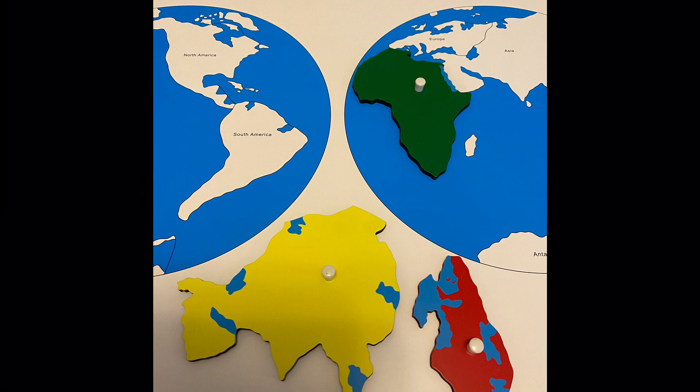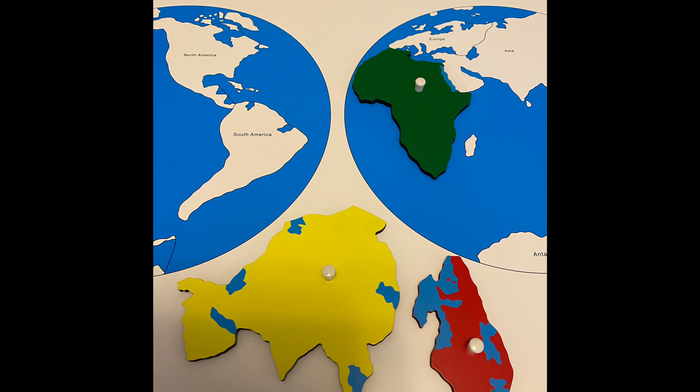Next, have the child remove the continent they live in from the puzzle. Have the child trace the continent they removed with their fingers, then find the same continent on the globe and trace its outline the same way.